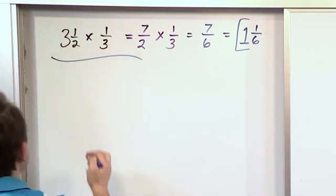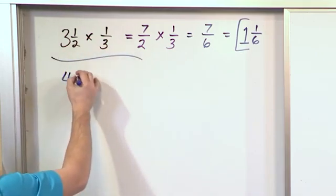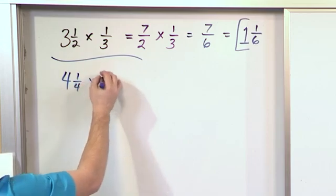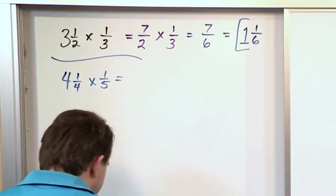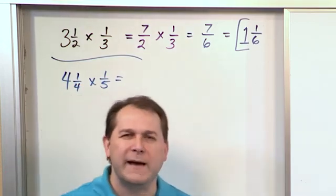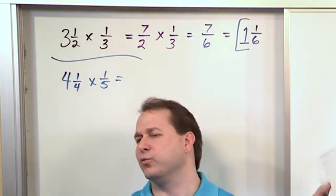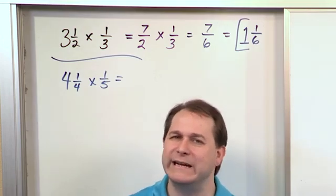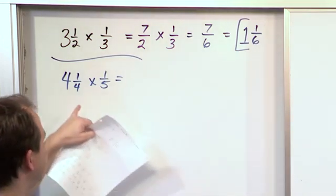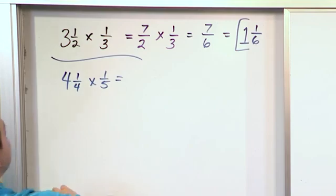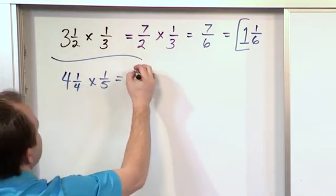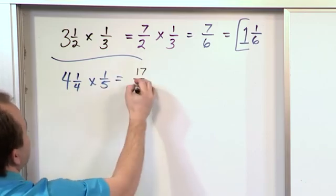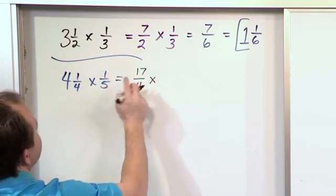So I hope you see now that when we're given mixed numbers like 4¼ times ⅕, really we're not doing much different. A lot of times students when they learn math see so many different rules, but really it's not any new rules. All I'm telling you to do is change this into an improper fraction and then you multiply as usual. 4 × 4 is 16, plus 1, 17. You write it over 4 and you multiply by ⅕.